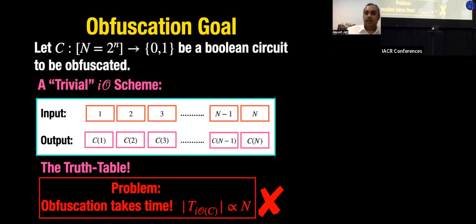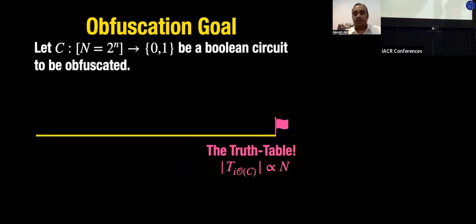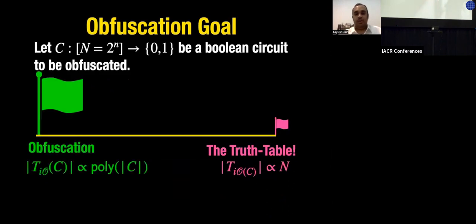However, there's a fundamental flaw: the time to obfuscate is proportional to capital N, since you have to run circuit C on N inputs. This doesn't qualify as a legitimate polynomial-time obfuscation scheme. On one hand you have this trivial truth-table construction; on the other hand, you'd like an obfuscation scheme where the time is polynomial in the size of the circuit C.